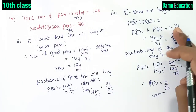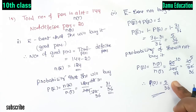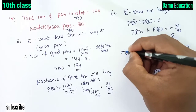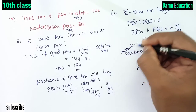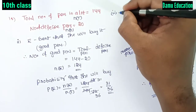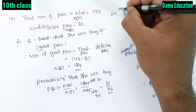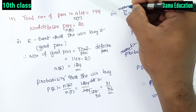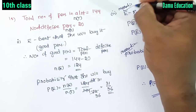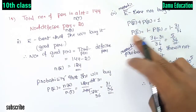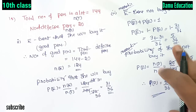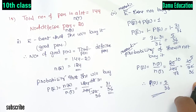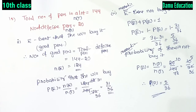Either you can go with Method 1 or Method 2 — these are the two methods for the probability that she will not buy it. If you like the video, please like it and try to share it with your friends and family members.